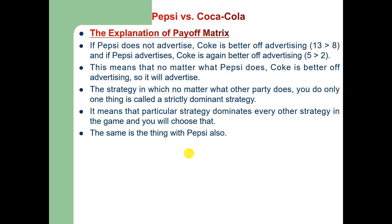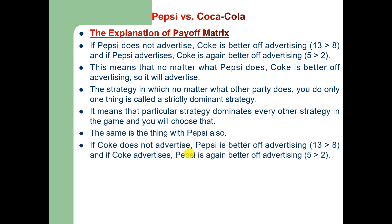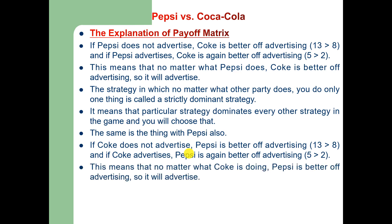The same thing is also true with Pepsi. If Coke does not advertise, Pepsi is better off advertising — its payoff is 13, which is greater than 8. And if Coke advertises, Pepsi is again better off advertising, with a payoff of 5 which is greater than 2. This means that no matter what Coke is doing, Pepsi is better off advertising, so it will also advertise.